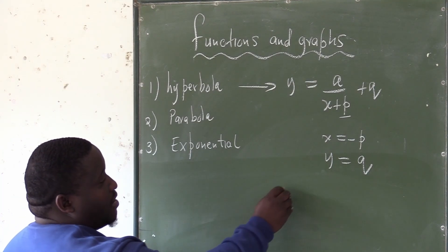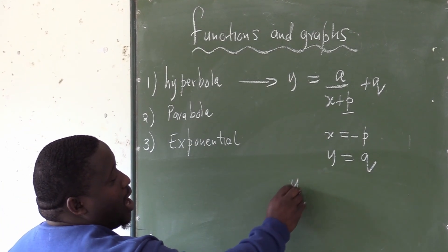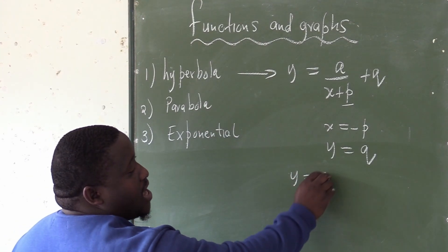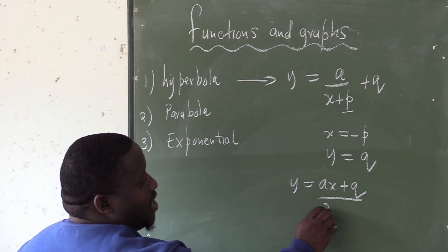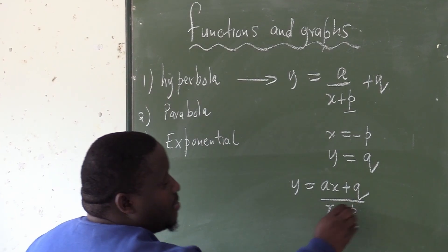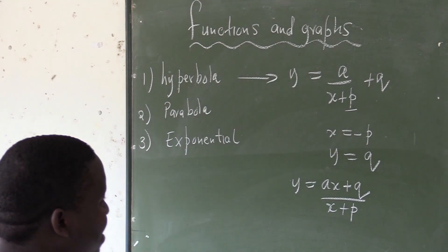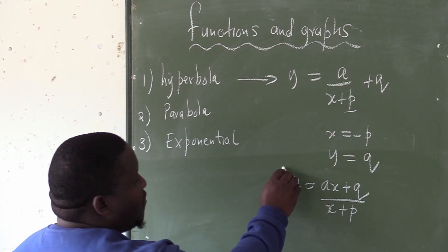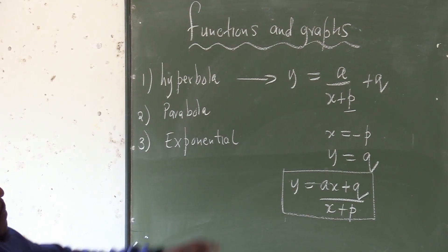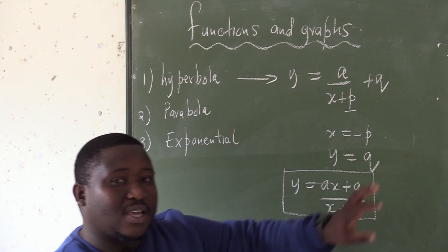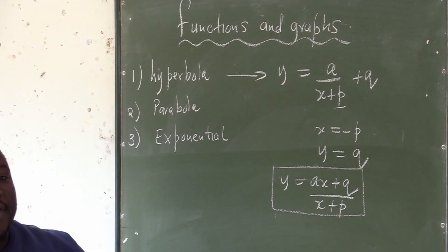You must be very careful if you come across a graph like y equals to ax plus q over x plus p. This is another form of a hyperbola. But you need to be very careful — one has to be able to convert this form back to the standard form so that one is able to see the equations of the asymptotes.